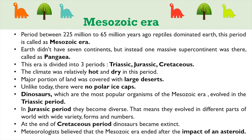Unlike today, there were no polar ice caps. Dinosaurs, which are the most popular organisms of the Mesozoic Era, evolved in the Triassic period. In the Jurassic period they became diverse — they evolved in different parts of the world with a wide variety of forms and numbers. At the end of the Cretaceous period, dinosaurs became extinct.